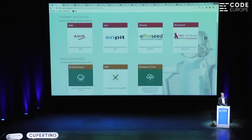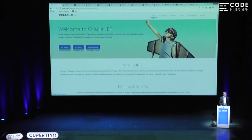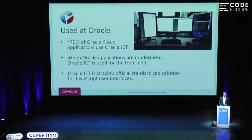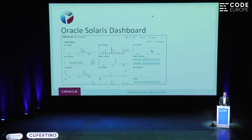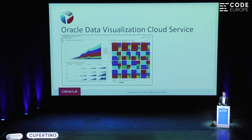You can also see some of the Oracle applications that are created with JET. Here are some other examples: Oracle Solaris Dashboard — you can recognize the graphs and charts from what we've talked about, as they come from the Oracle JET component library. Another example: Data Visualization Cloud Service.